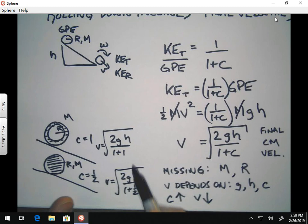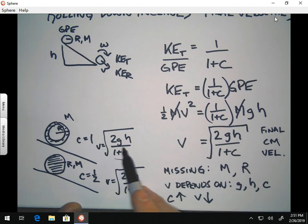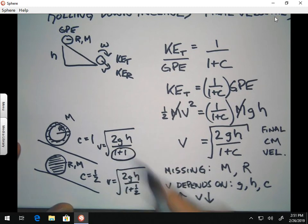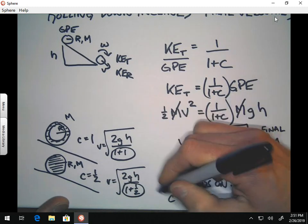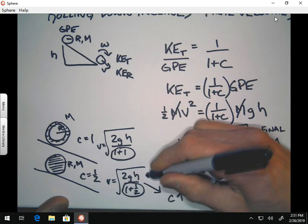And I hope you can tell that you've got a bigger denominator here. One plus one is bigger than one plus one-half. And so, the object which is going to be moving faster is going to be the disk.